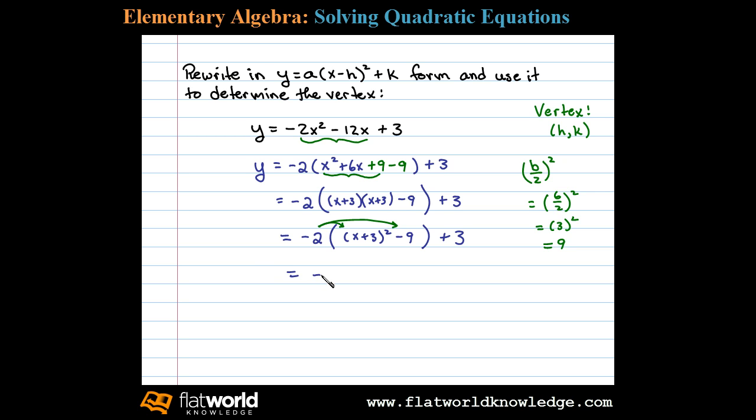And we have negative 2 times x plus 3 squared plus 18 plus 3, and then finally negative 2 times x plus 3 squared plus 21.